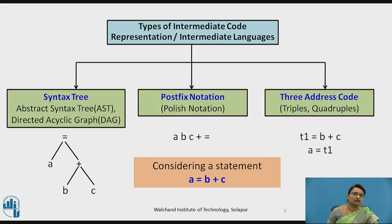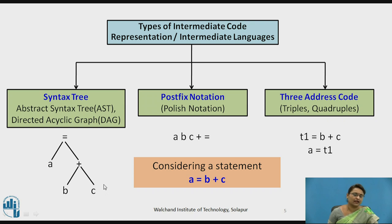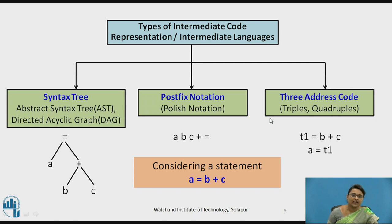Basically there are three types of intermediate code representations, also called intermediate languages. The first type is the syntax tree, which comes in two forms: abstract syntax tree and directed acyclic graph. The second notation is postfix notation in Polish notation, where any statement converted to postfix notation is considered intermediate code. The third type of representation is three-address code, which has three forms: triples, quadruples, and indirect triples.